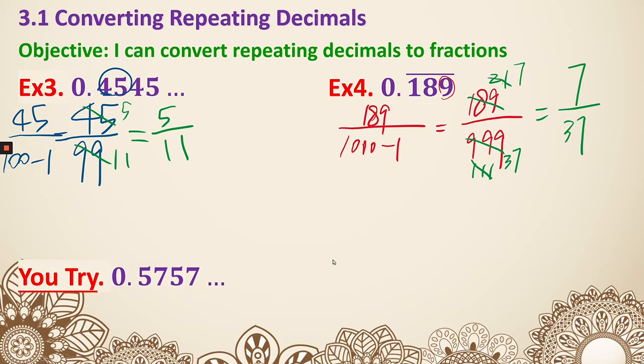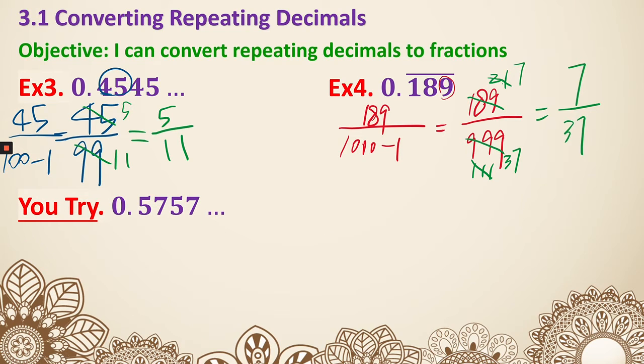Now let's try a few more examples. Same thing, 57 over 99. They can all be divided by 3, so 33 on the bottom and 19 on top.